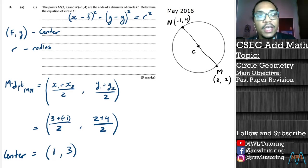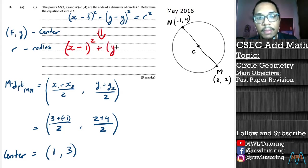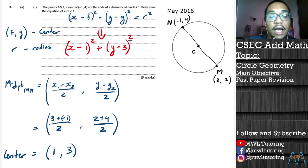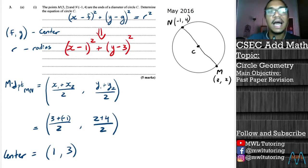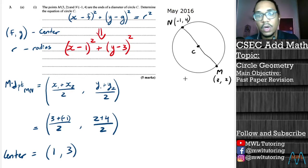Immediately we have a piece of the equation of the circle and we can substitute it in from the general form. We now have (x - 1)² + (y - 3)². All we need now is r². We've just found the center of the circle, so let's add that information — center (1, 3) — into our diagram and see how it helps us out.